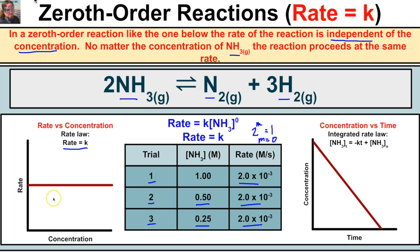If we graph the rate law for this reaction — rate equals k — we notice that the rate remains unchanged no matter what happens to the concentration. Whether we double it, triple it, quadruple it, or cut it in half, the rate stays the same. The graph of a zeroth order rate law is a horizontal flat line. We can also take what is called the integrated rate law.